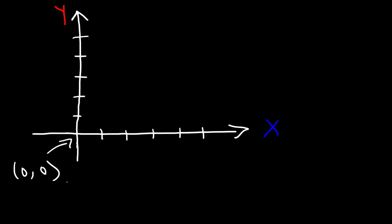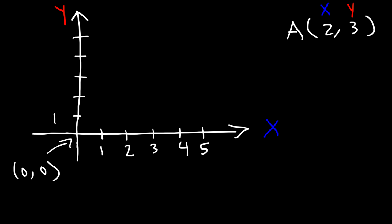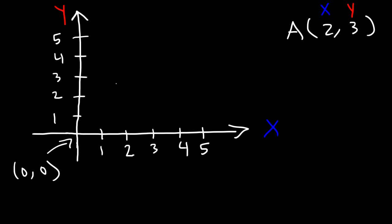So this is a coordinate system. Now, let's say if we want to plot point A, and point A is located at (2, 3). The first number is the x-coordinate, and the second number is the y-coordinate. So to plot it, we need to locate 2 on the x-axis and then we need to locate 3 on the y-axis. Here's 2 on the x-axis, so point A is going to be at that location.